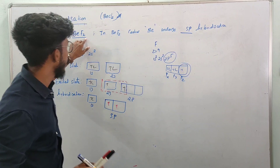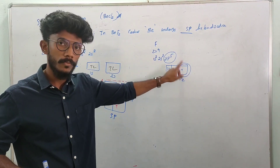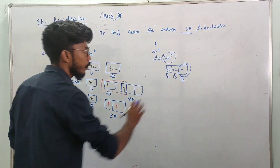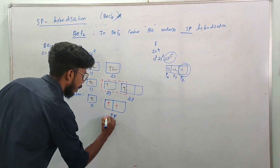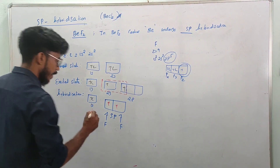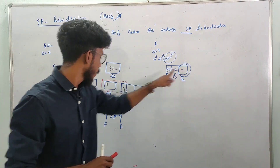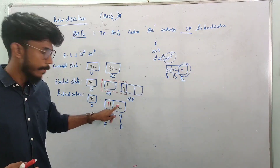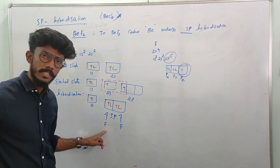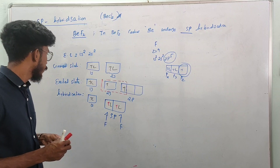There are 2 fluorine atoms. Each fluorine has one unpaired electron in a p orbital. The sp hybrid orbital of beryllium overlaps with the p orbital of fluorine to form a bond. We pair the hybrid orbital to form beryllium fluoride. This is the hybridization of beryllium fluoride.